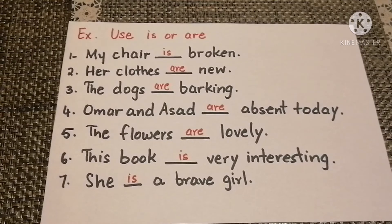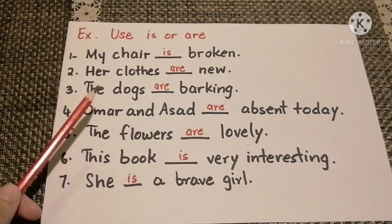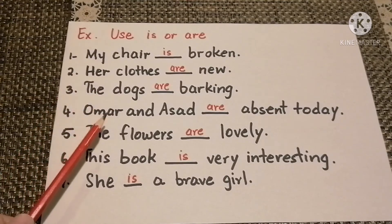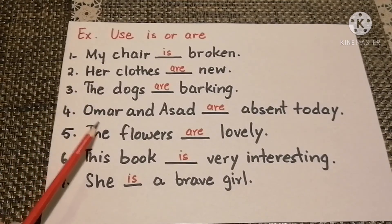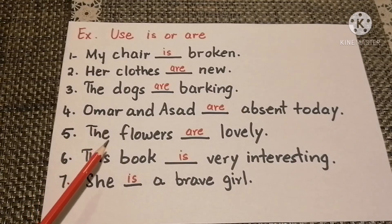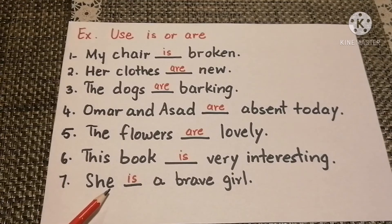Now an exercise: use 'is' or 'are' to complete the sentence. My chair is broken. Her clothes are new. The dogs are barking. Umar and Asad are absent today. The flowers are lovely. This book is very interesting. She is a brave girl.